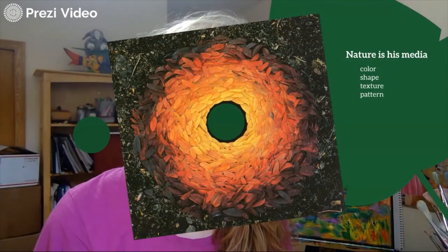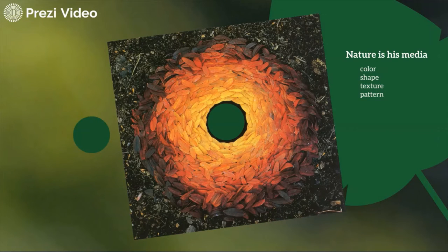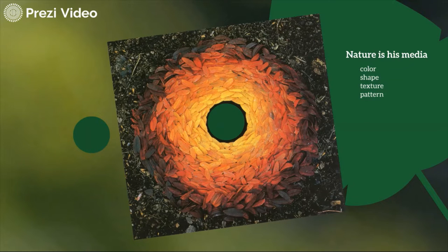Andy Goldsworthy's media in his art — that's what he used to make his art — was nature itself. Here you see a picture of just leaves. He had to go out and sort through leaves in the fall and sort the colors and figure out what he was going to do with the whole piece. A good gust of wind is going to blow this away, so keep in mind that all of his work was very temporary. His art becomes the photograph of his arrangement in nature. Nature is his media to make art.